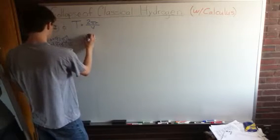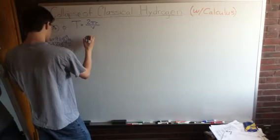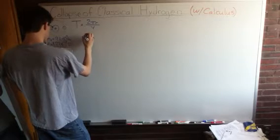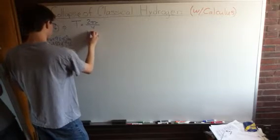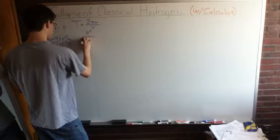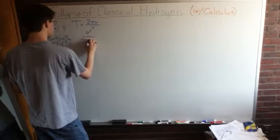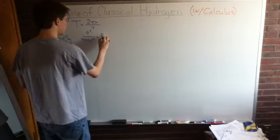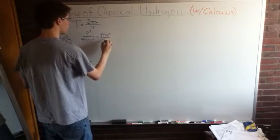So, the Coulomb force is q squared divided by 4 pi epsilon naught r squared. And the centripetal force is given by mv squared over r.